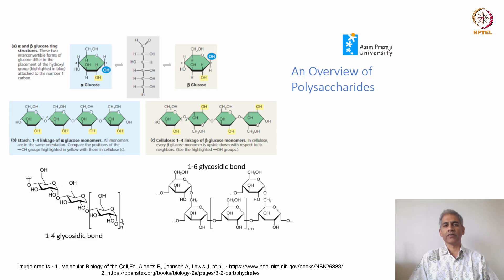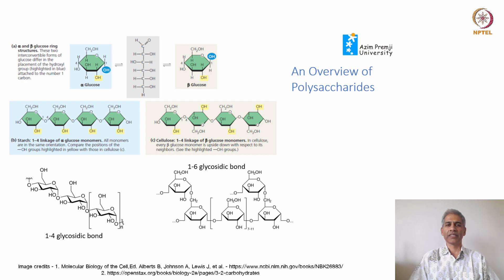Polysaccharides are made up of simpler molecules such as sugars or monosaccharides. Here we can look at the structure of glucose, which is the main sugar used in making polysaccharides. Glucose can exist in the straight chain form or in the ring form, and the ring form is of two types. You can have alpha or beta glucose, and they differ based on the position of the OH group attached to the carbon at the first position in the ring, shown here in blue.